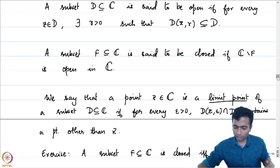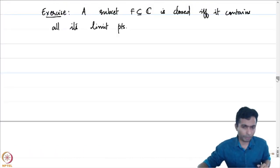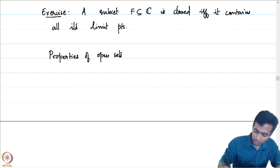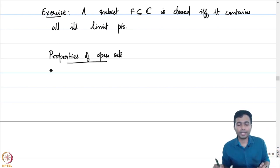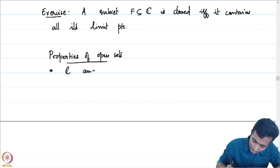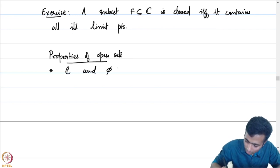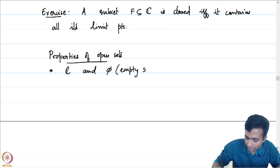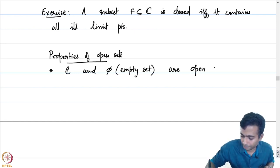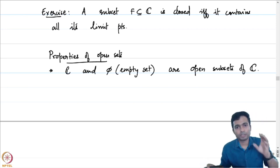So that is the definition of an open set and a closed set. The open sets satisfy certain properties. Some properties of open sets: the first one is that C and the empty set are both open sets. Any finite intersection of open sets is again an open set.